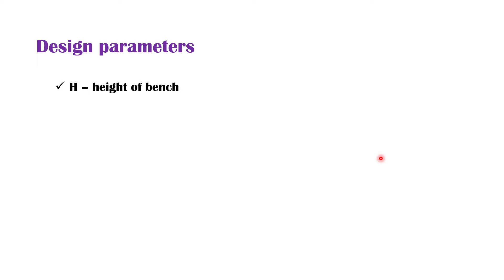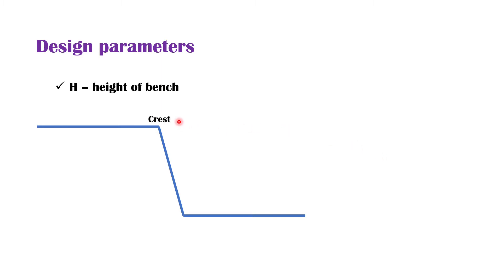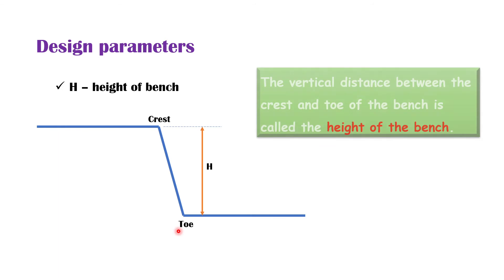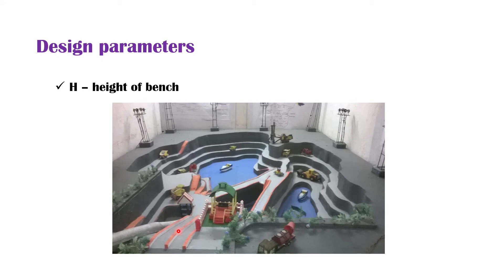What is the height of bench? Suppose this is the open cast bench — this is the crest of the bench and this one is the toe of the bench. The vertical distance between the crest and toe of the bench is called the height of the bench. This is one open cast mine and these are the benches of this mine. This edge is called the height of the bench.